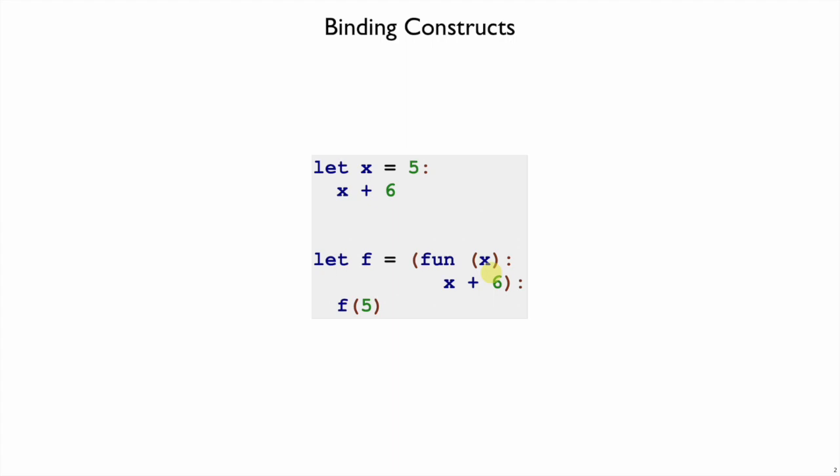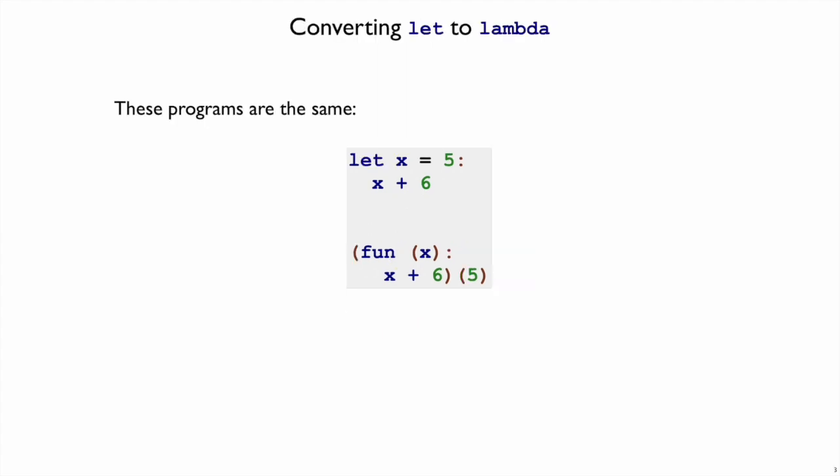In the interpreter, these things are implemented the same way. Both of them bind x to 5 in the environment. In fact, they're related in a deep way.